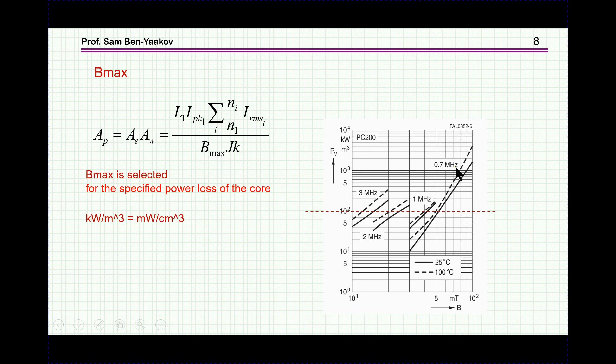For example, for 0.7 megahertz, this will be about 50 milli-tesla, while at, say, 3 megahertz, it'll be around, say, 12 or 13 milli-tesla, much lower. These two curves are, by the way, for two different temperatures of the core.